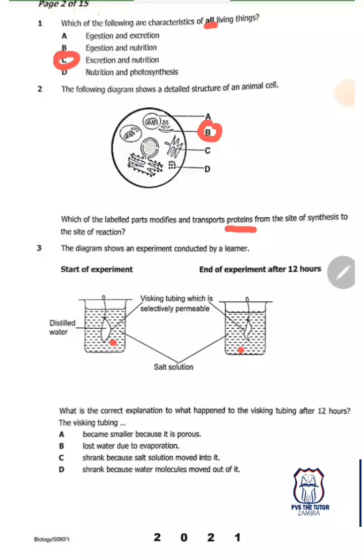Looking at this, in the beginning the water is a lot there, but at the end of the experiment the water has vanished - most of it has gone out. This is through osmosis. Whenever talking of water, talk of osmosis. The salt solution is more concentrated, while distilled water is less concentrated, so water will move out of the visking tubing into the solution. The visking tubing shrank because water molecules moved out of it - simple as that.